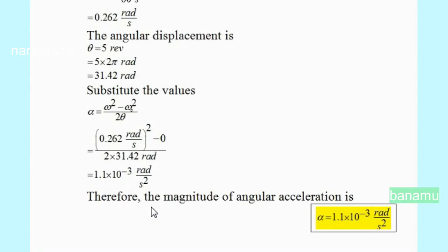Therefore, the magnitude of the angular acceleration is alpha equals 1.1 times 10 to the power of minus 3 radians per second squared.